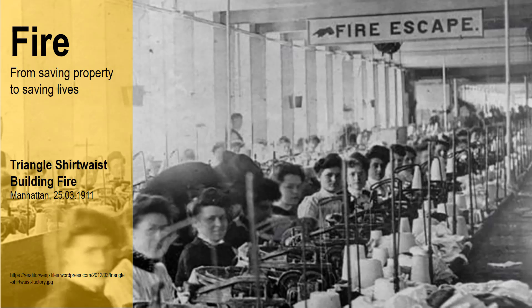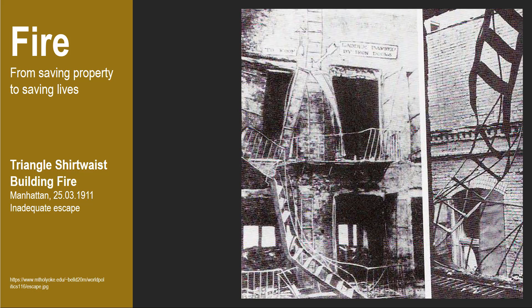Fire suppression inside the building was totally inadequate and the technology of the fire department at that time could not make an impact at such a high level. The main cause of the large death toll was attributed to the inadequacy of the fire escape. There was only one escape and the spreading fire damaged the poorly constructed stairwell which collapsed, rendering it unusable. The firefighters' ladders could only reach to the 6th floor, and therefore most of the workers who did not escape were trapped and consumed by the smoke and flames. It was reported that 62 victims jumped or fell to their deaths trying to escape the flames.